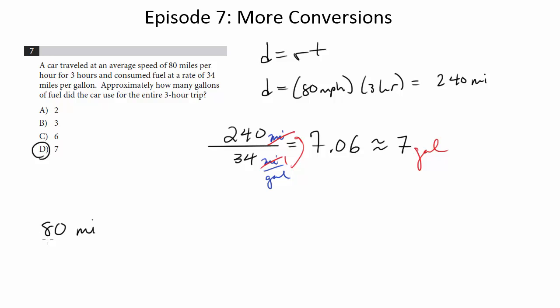So we're going to write 80 miles per hour, and we want to convert this into miles. So that means I want to get rid of the hours. Notice to do that, I'm going to have to multiply by hours on top, and when I do that, the hours units are going to cancel, and I'm just going to be left with miles. So notice 80 miles per hour times 3 hours is going to give me my distance of 240.